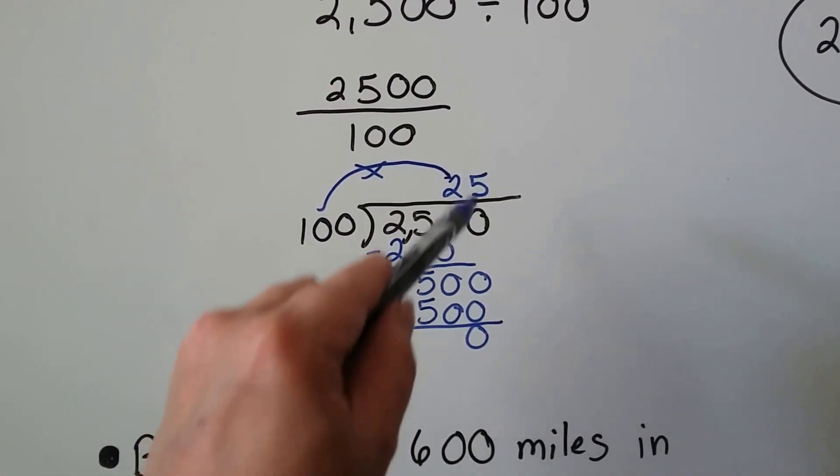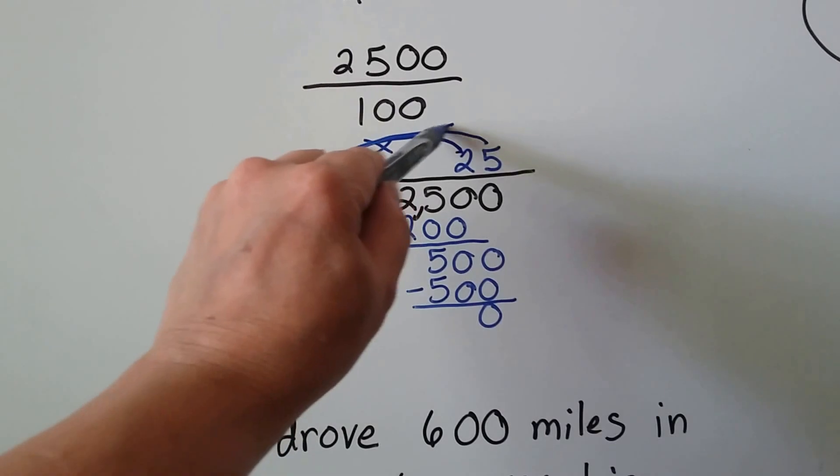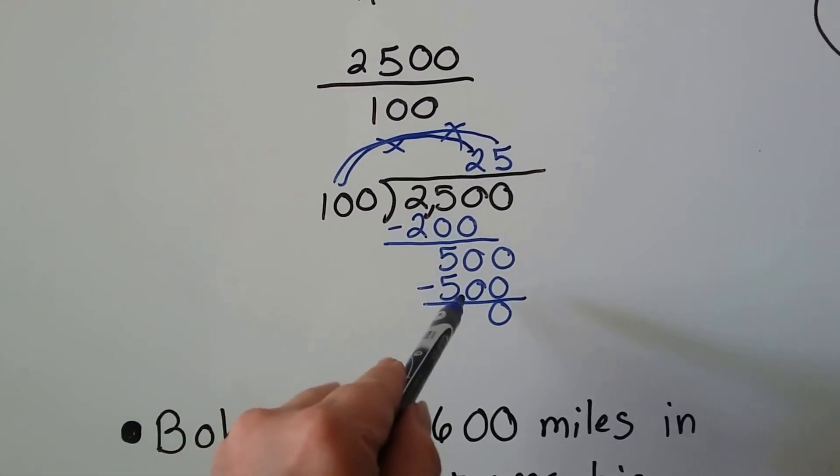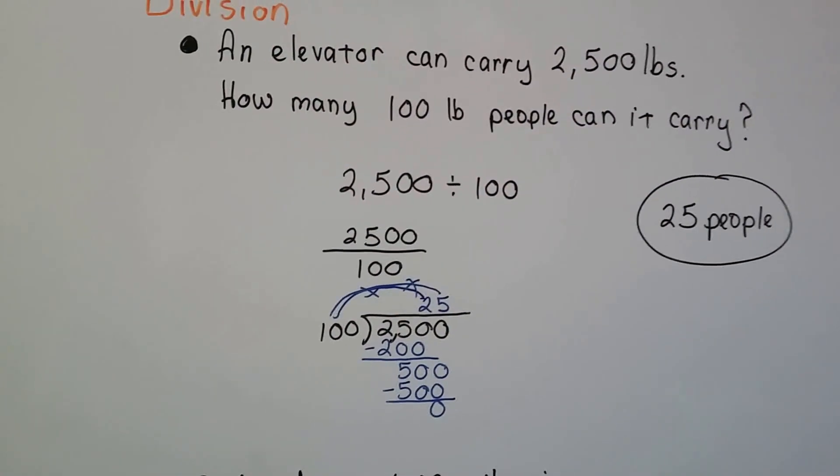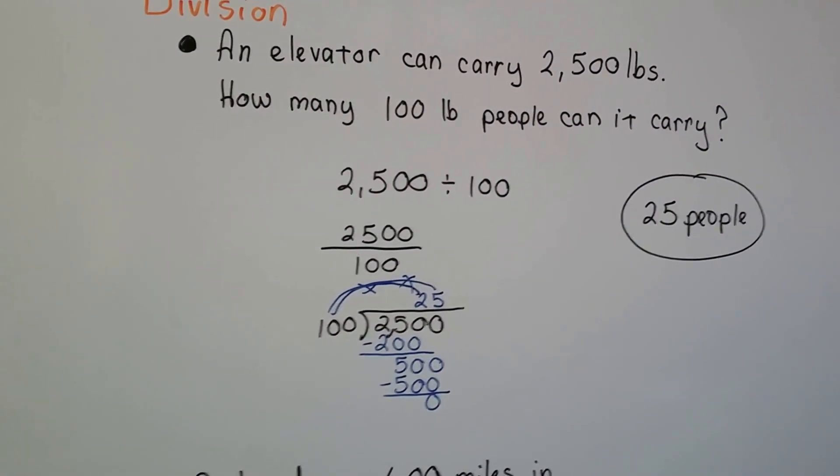And now it's that 0's turn to come down. 100 goes into 500 five times. And then we do the 5 times 100. See? And we write our 500 and we get a 0. So we know that 25 people will be able to fit on the elevator if they all weigh 100 pounds.